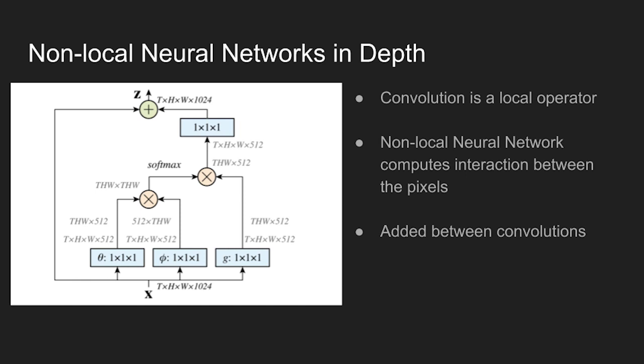Convolution in Neural Network is a local operator that sees area within its kernel. Multiple convolutions are stacked to increase the receptive field, but there's still a limitation to see global features. Nonlocal block is usually added between convolutions to compute all the interaction between the pixels.